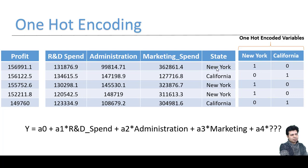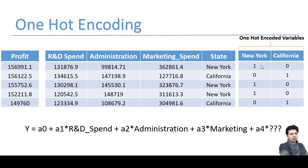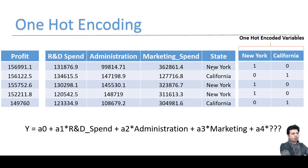The problem is that 0, 1, 2 imply an ordering — 0 is less than 1, 1 is less than 2 — but we can't say New York is less than California or California is less than Florida. Many machine learning algorithms can't handle this categorical data properly. One-hot encoding is the method that allows machine learning algorithms to correctly handle categorical variables without implying any ordinal relationship.